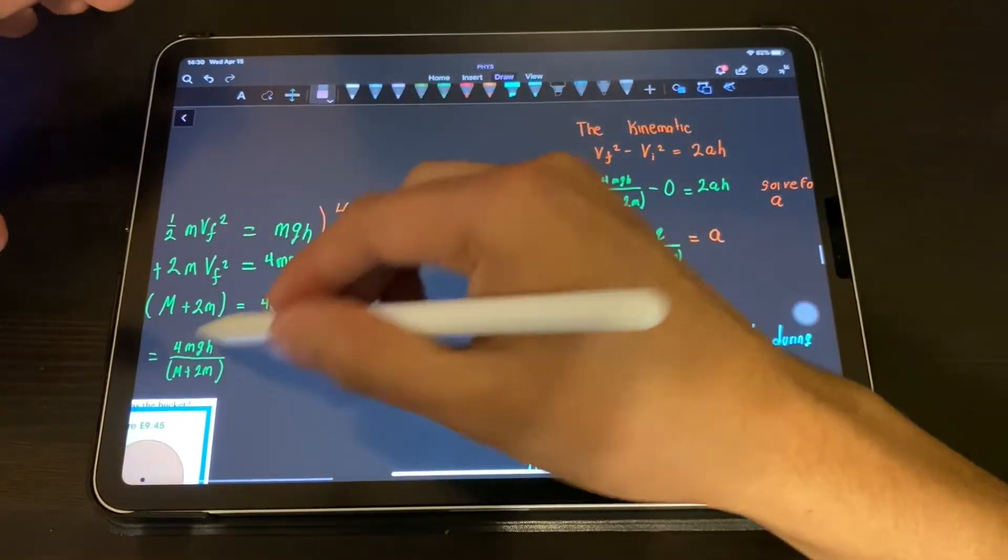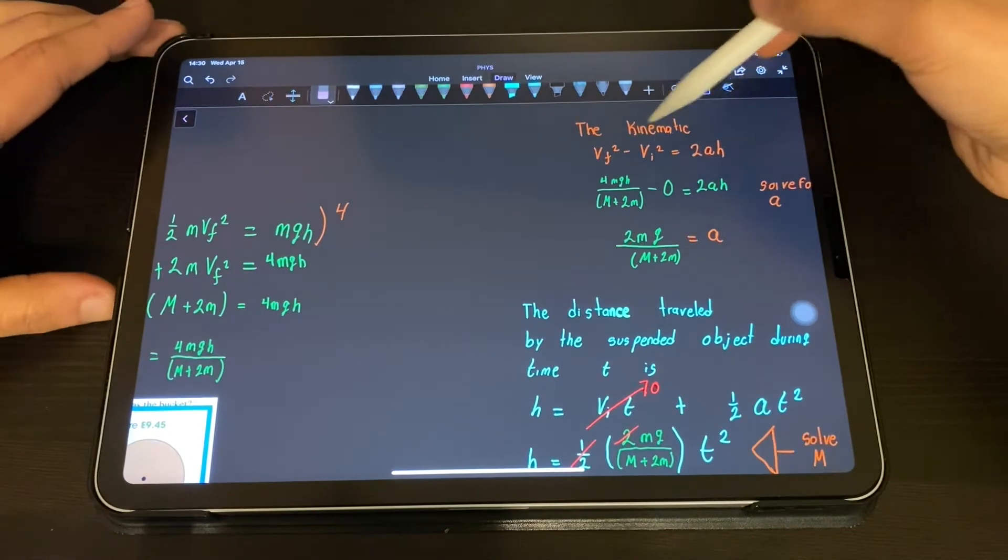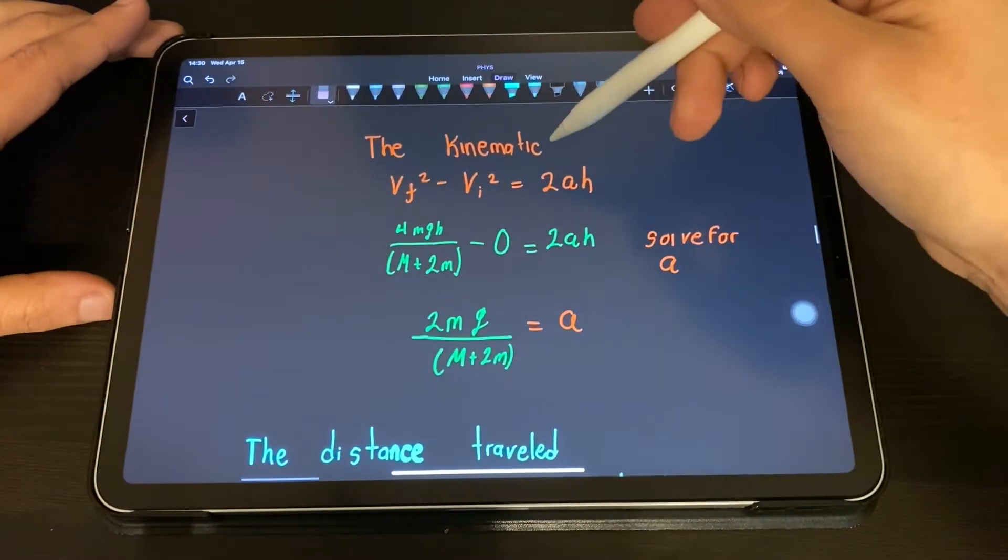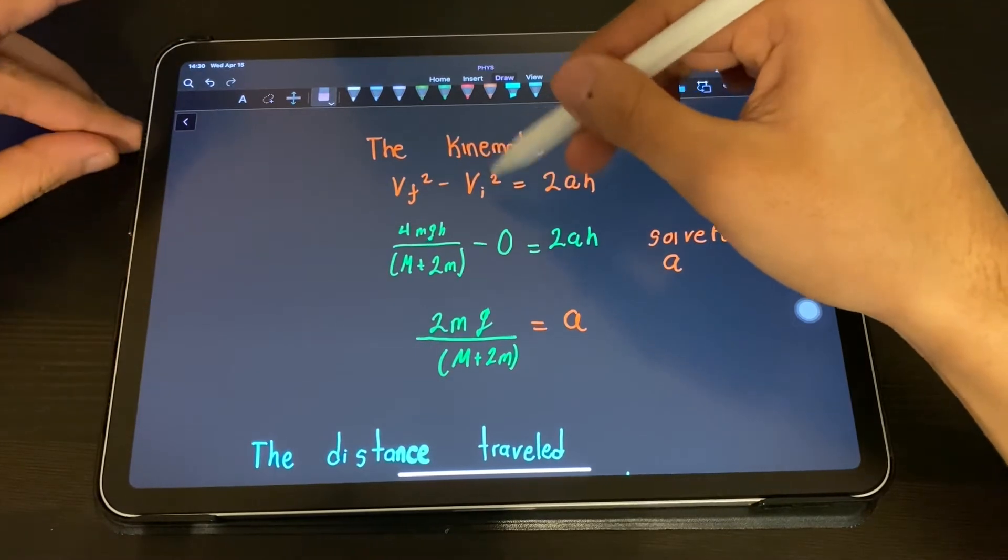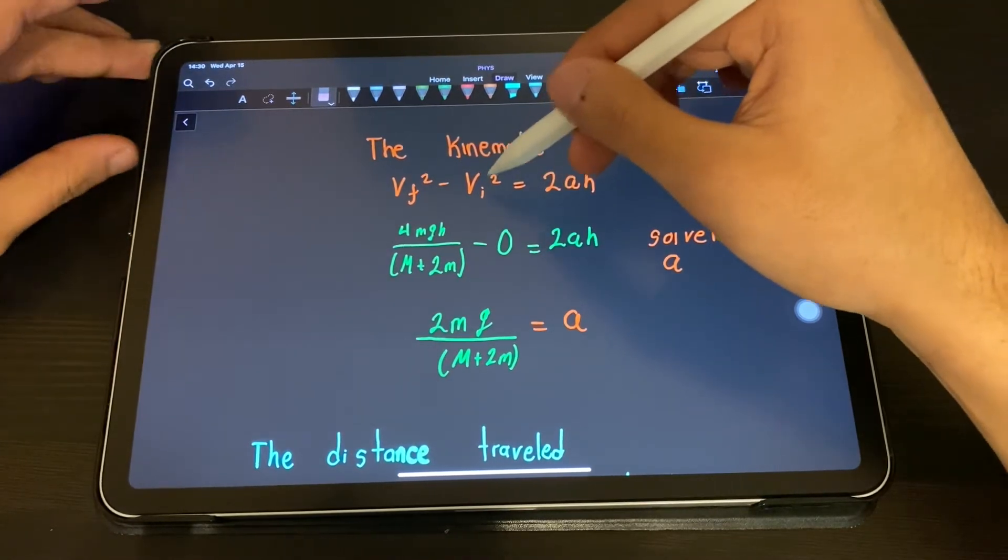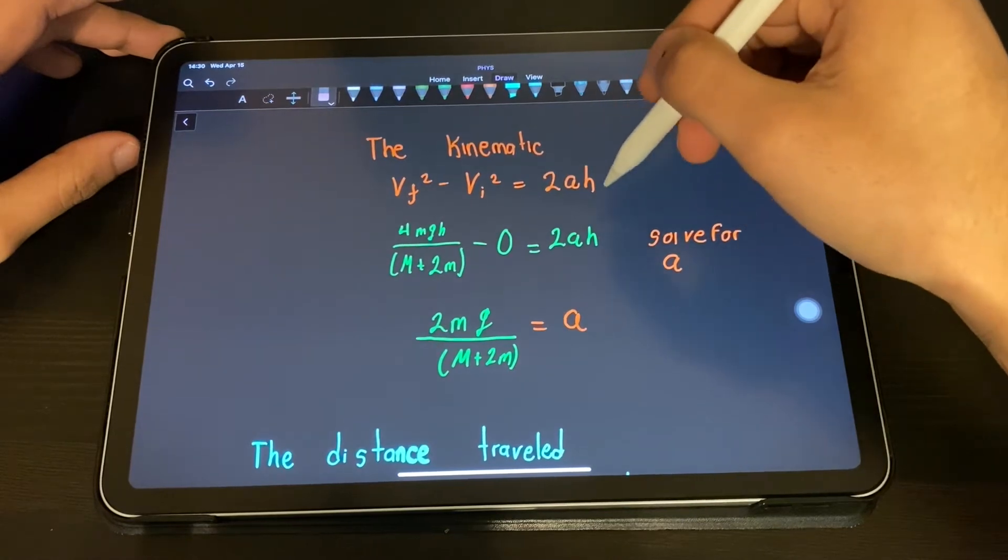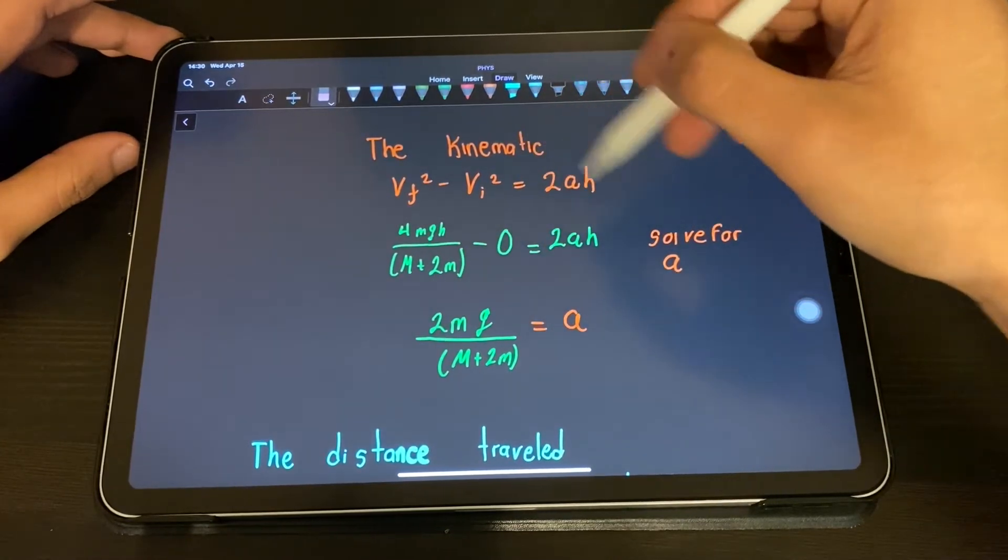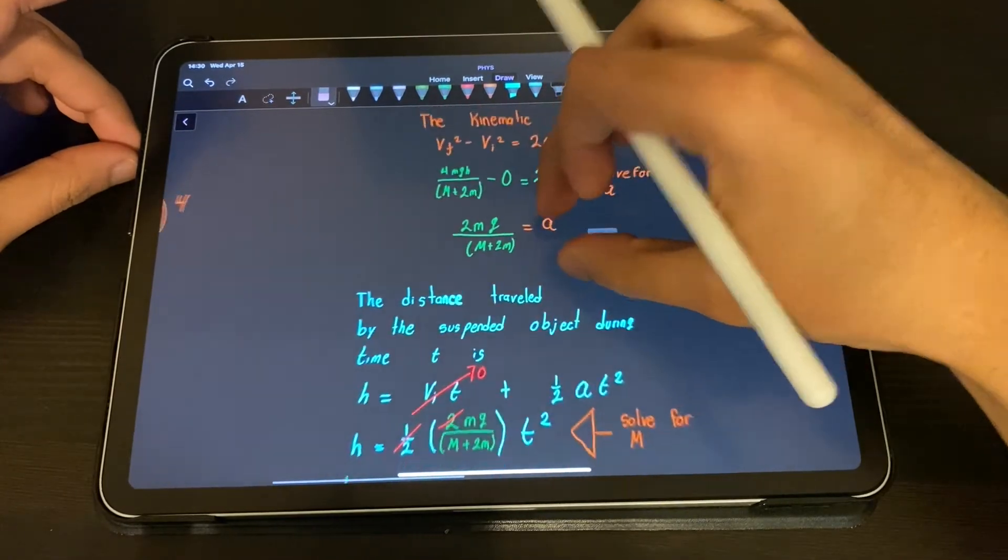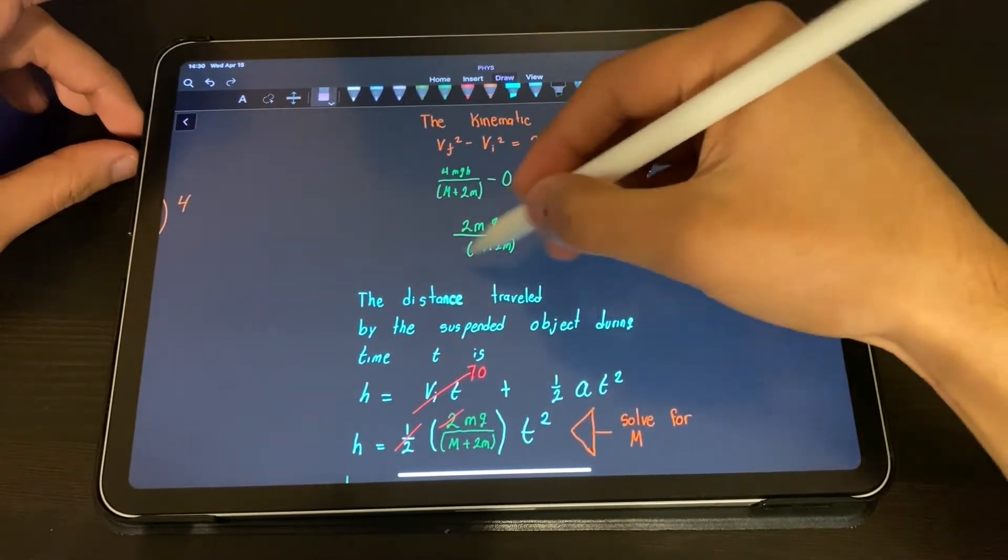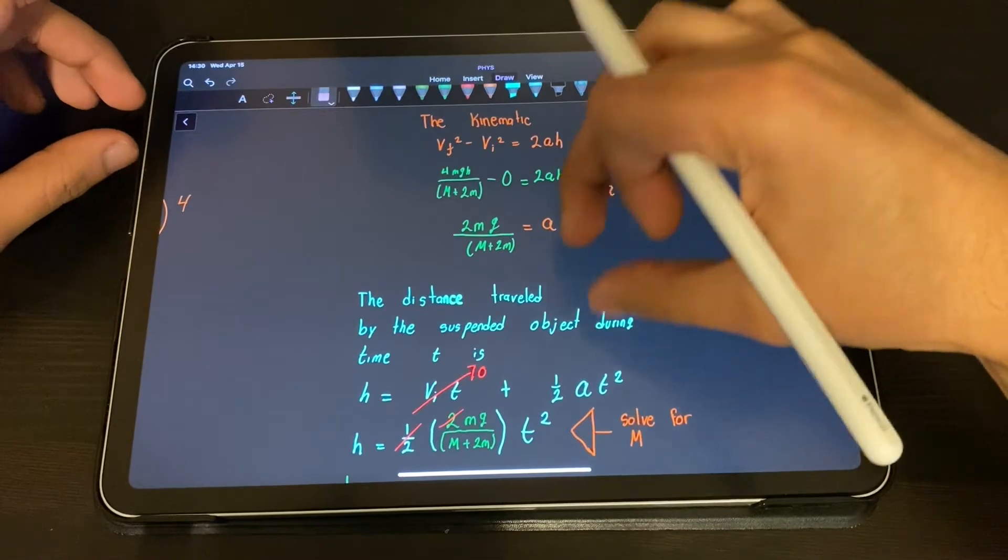We bring this equation and plug it into this kinematics and we don't have an initial velocity so that goes to zero. Based on this we solve to find the acceleration, so we get this formula.